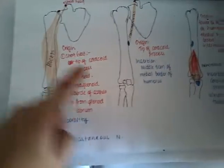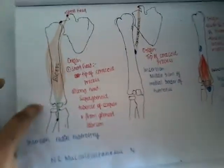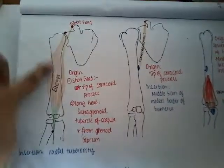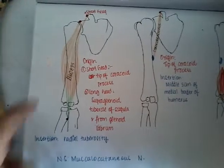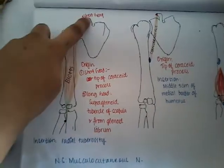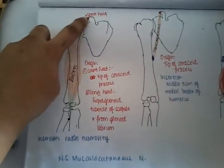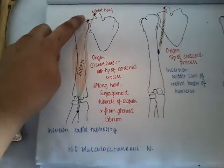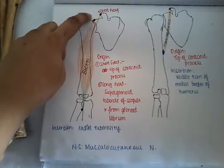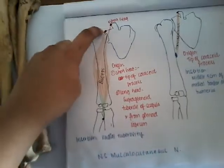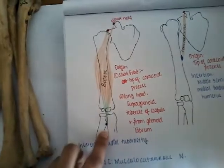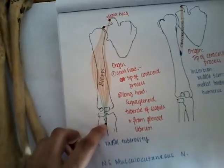They are biceps brachii, coracobrachialis, and brachialis. Biceps brachii has two heads. Looking at the scapula, humerus, radius, and ulna — the short head arises from the tip of the coracoid process, whereas the long head arises from the supraglenoid tubercle. It runs along the humerus and gets inserted into the radial tuberosity.